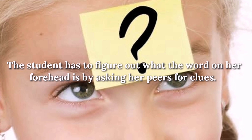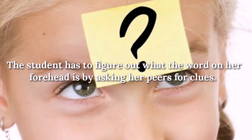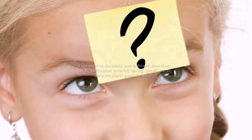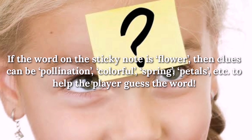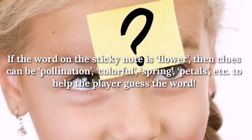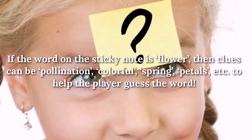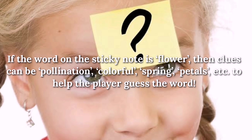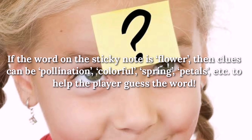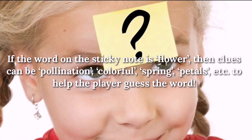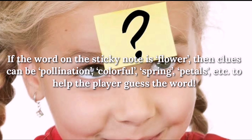The student has to figure out what the word on her forehead is by asking her peers for clues. If the word on the sticky note is 'flower,' then clues can be pollination, colorful, spring, petals, etc., to help the player guess the word.